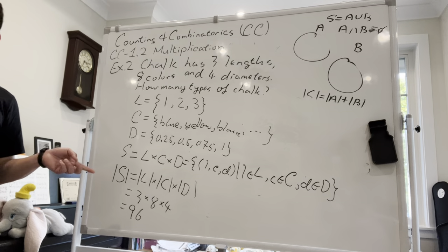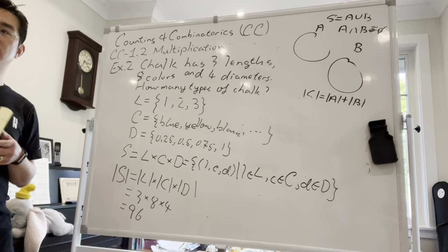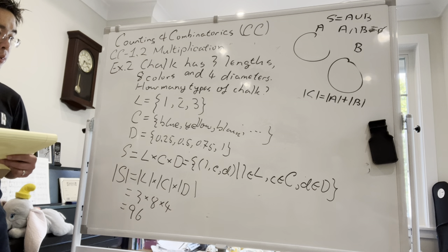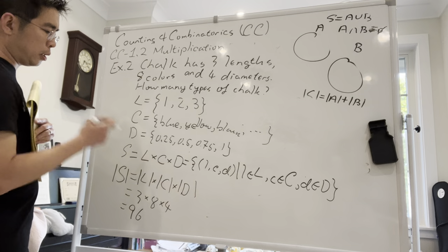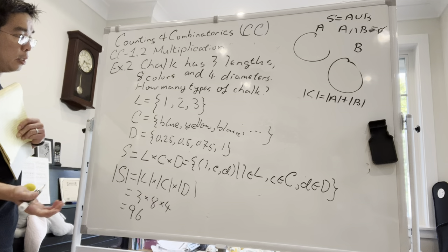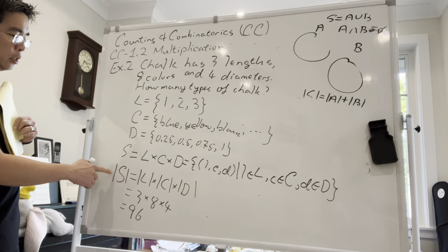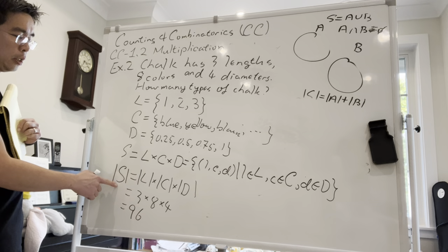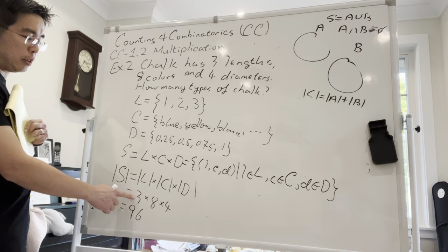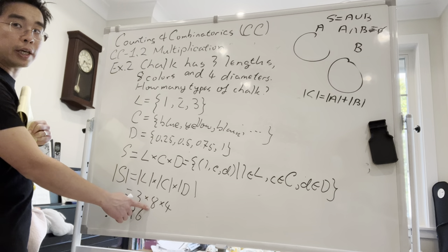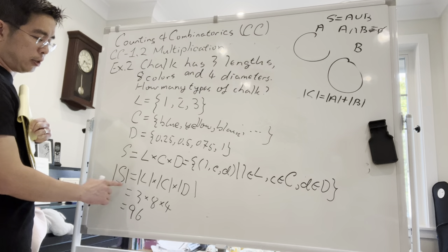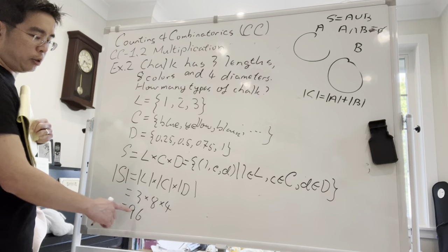To clarify: the total number of chalks equals the number of lengths (three), times the total number of colors (eight), times the number of diameters (four). So S equals three times eight times four, and that's 96.